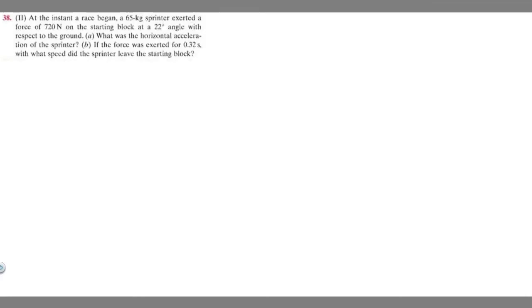In this problem, we're told that at the instant a race began, a 65kg sprinter exerted a force of 720 N on the starting block at a 22 degree angle with respect to the ground. Part A: what was the horizontal acceleration of the sprinter? And Part B: if the force was exerted for 0.32 seconds, with what speed did the sprinter leave the starting block?